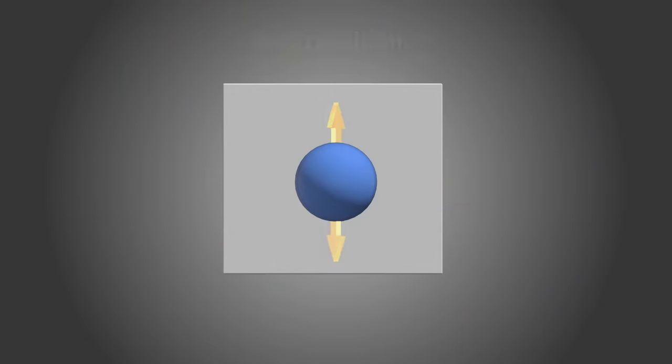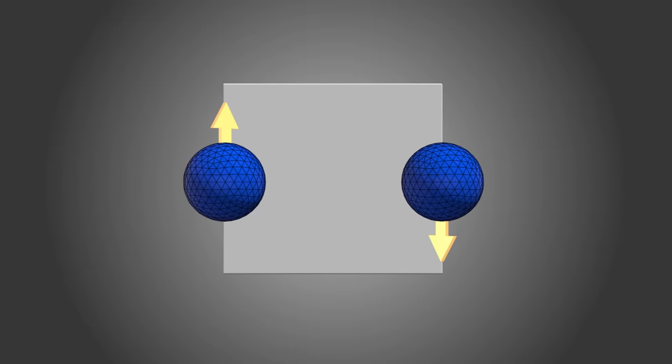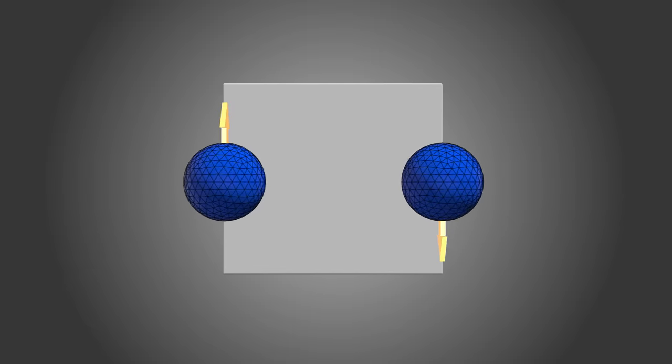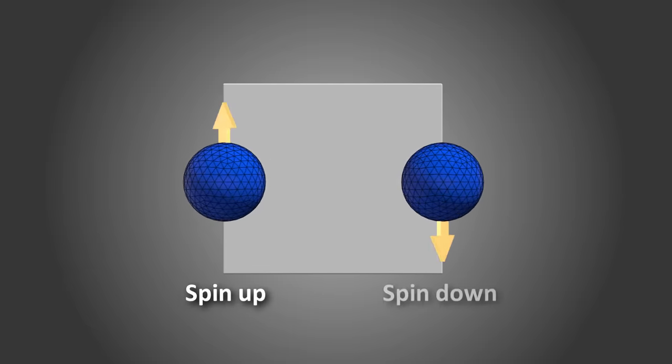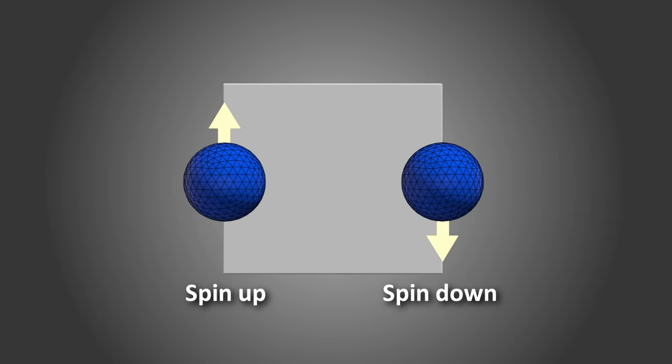Now imagine a quantum particle that has been put in a state where if we look at it, we might find with 50-50 probability that it's either this or that. Not a male or female particle, of course, but we might find it spinning either one way or the other.